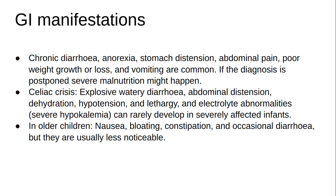An introverted attitude and impatience are examples of behavioral changes. A celiac crisis, characterized by explosive watery diarrhea, considerable abdominal distension, dehydration, hypotension, and lethargy, and frequently by profound electrolyte abnormalities including severe hypokalemia, can rarely develop in severely affected infants. GI symptoms in older children include nausea, bloating, constipation, and occasional diarrhea, but they are usually less noticeable.